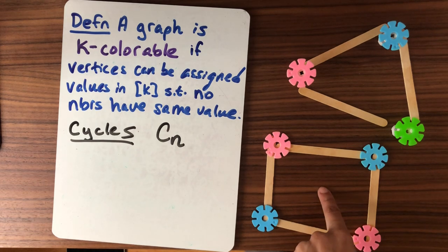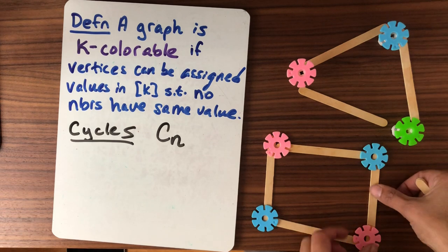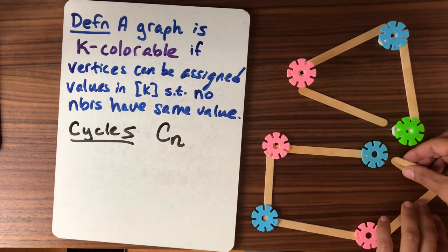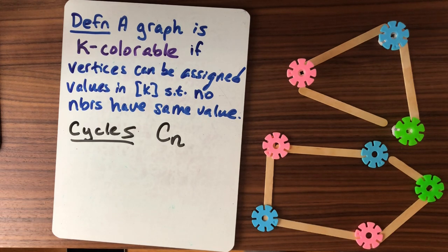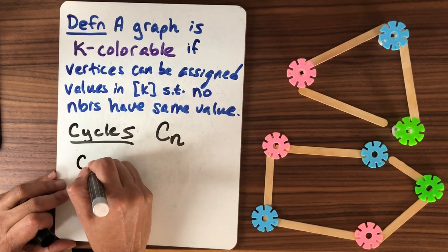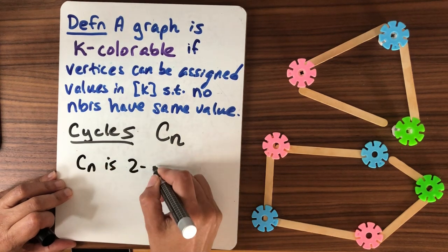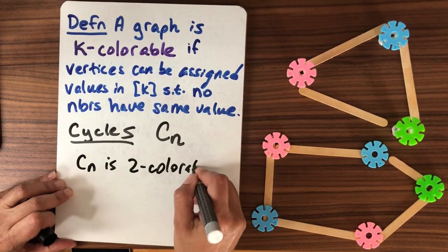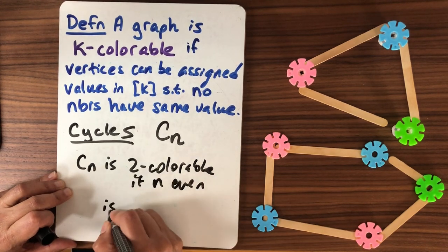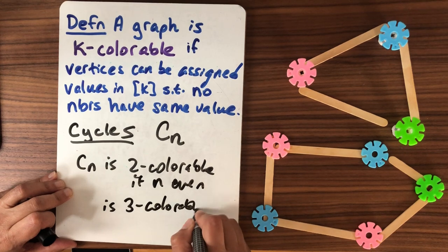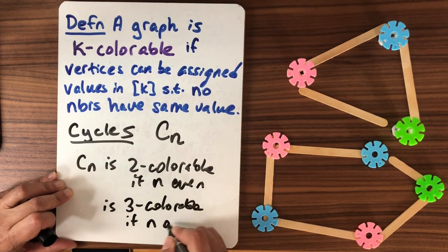And now what if we wanted to add another vertex, maybe pulling this one out? We wanted to add another vertex here. What would we have to do? Well we can't make it pink or blue, so we'd have to make it green. So it's easy to see that Cn is two colorable if n is even and it's three colorable if n is odd.